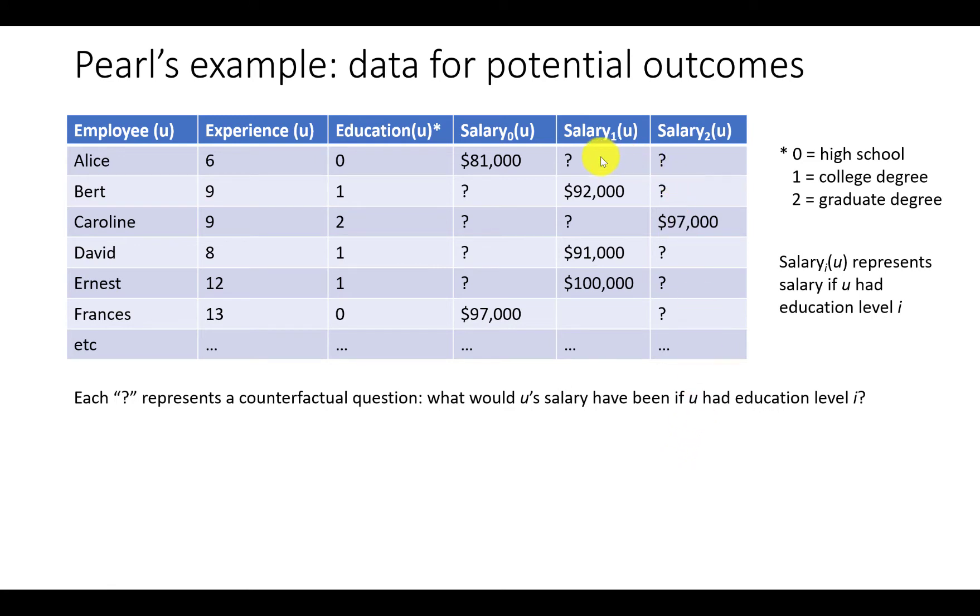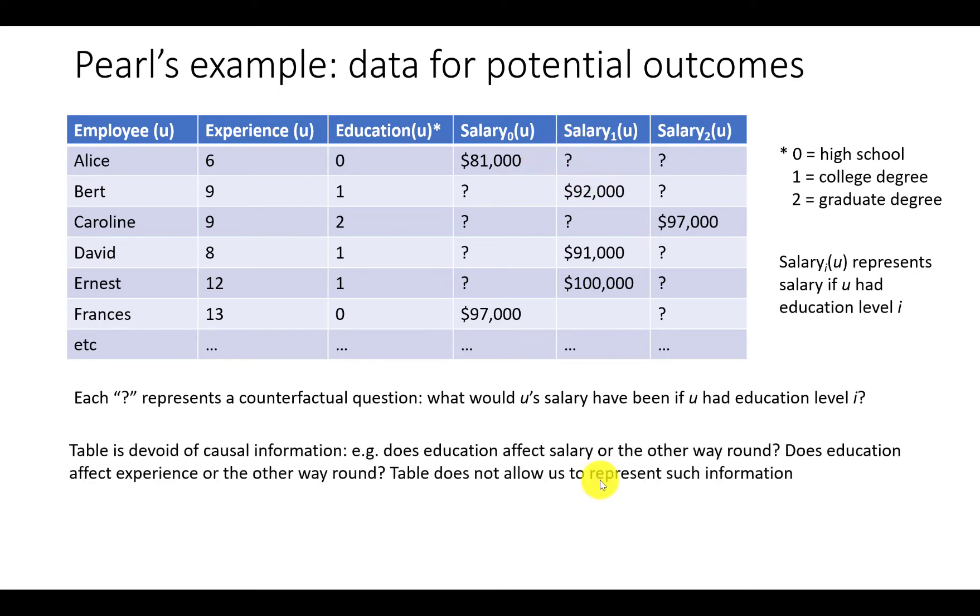Each question mark represents a counterfactual question. What would your salary have been if they'd had education level i? For example, what would Alice's salary have been if she'd had a college degree? The problem for statisticians and computer scientists who think they can answer such questions accurately is that the table is devoid of causal information.